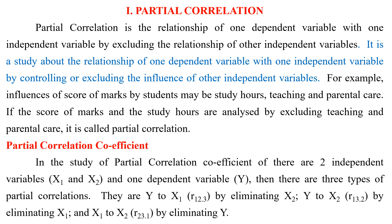Partial correlation is the relationship of one dependent variable with one independent variable by excluding the relationship of other independent variables. It is a study about the relationship of one dependent variable with one independent variable by controlling or excluding the influence of other independent variables. For example, if the score of marks and study hours are analyzed by excluding teaching and parental care, it is called partial correlation.